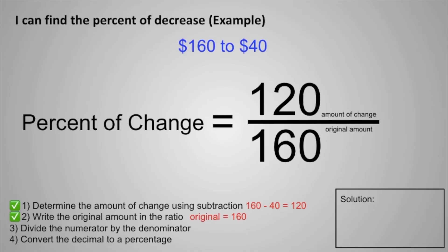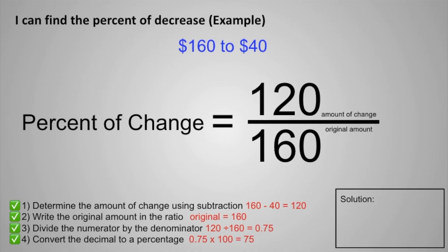Step three is to divide the numerator by the denominator. 120 divided by 160 is equal to 0.75. The final step: convert the decimal to a percentage. 0.75 times 100 is equal to 75, and then add a percent sign. Since the first value is larger than the new value, we know that this is going to be a percent decrease. So the final solution is 75% decrease.